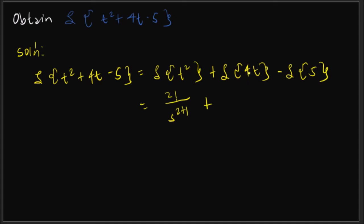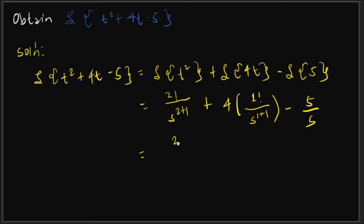For the second term, we treat 4 as the coefficient and take the Laplace transform of t, which is t to the n with n equal to 1, giving 1 factorial over s squared, so that's 4 over s squared. For the constant 5, the Laplace transform is 5 over s. Since 2 factorial equals 2, our final answer is 2 over s cubed plus 4 over s squared minus 5 over s.